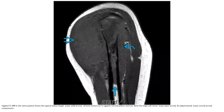This is a T1 MRI in the same patient, showing the typical sharp margin of bone tumor on T1, with normal yellow marrow signal. Note the large soft tissue and superior steel component.